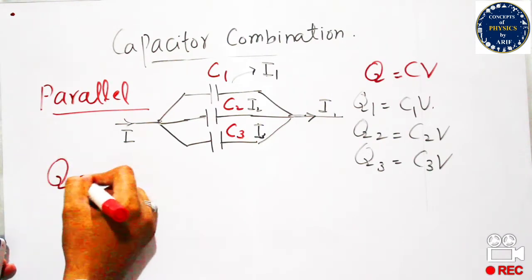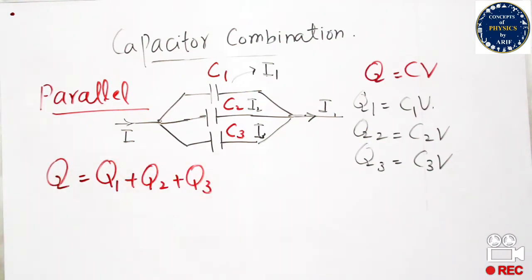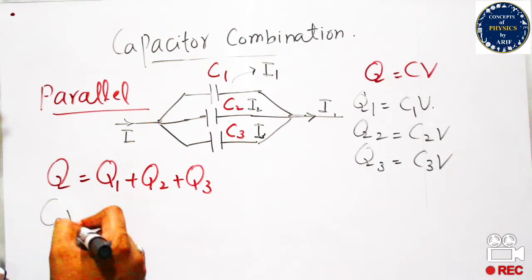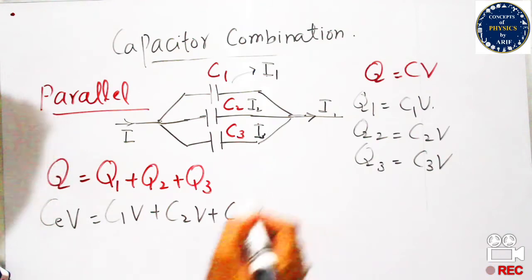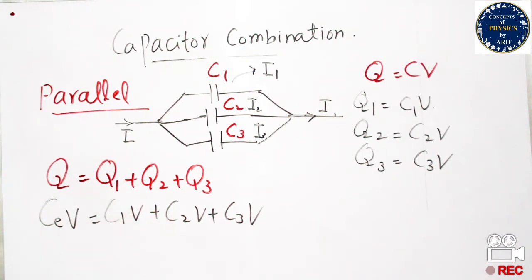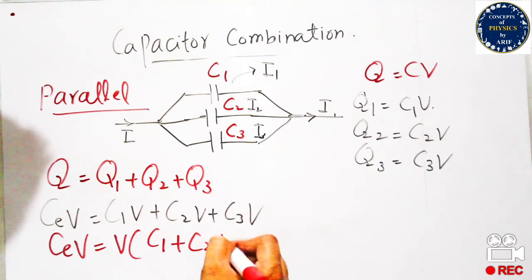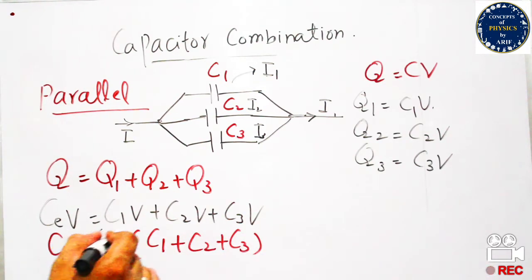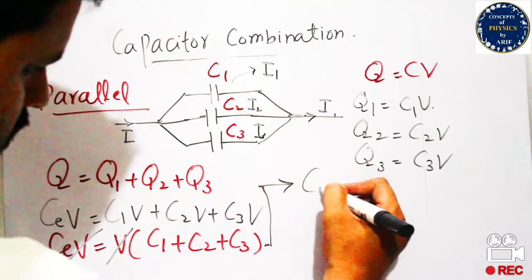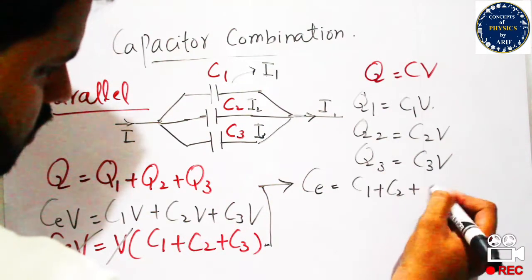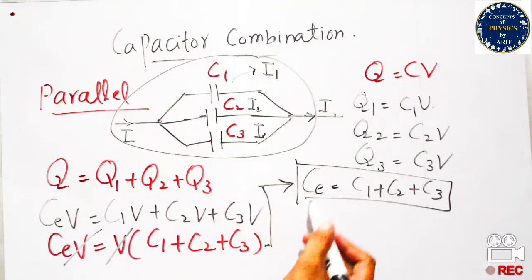The total charge is Q = Q1 + Q2 + Q3. Since Q = Ce·V, substituting gives Ce·V = C1·V + C2·V + C3·V. Taking V as common from the right-hand side and cancelling V from both sides, we get the final expression: Ce = C1 + C2 + C3. From this expression, the equivalent capacitance in parallel combination is greater than each individual capacitance.